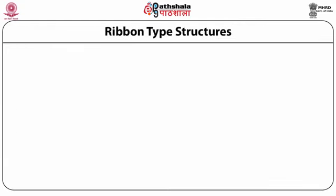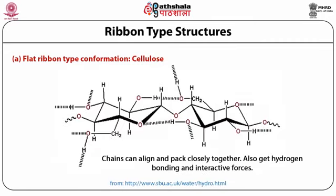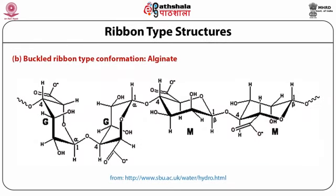A ribbon-type structure is also possible, where, apart from the glycosidic bond, hydrogen bonding between two sugar units can change the overall conformation. In cellulose, this results in a flat ribbon-type conformation where chains align closely through hydrogen bonding. Alginate, another polysaccharide, adopts a buckled ribbon-type conformation due to the free rotation of glycosidic bonds and hydrogen bonding.